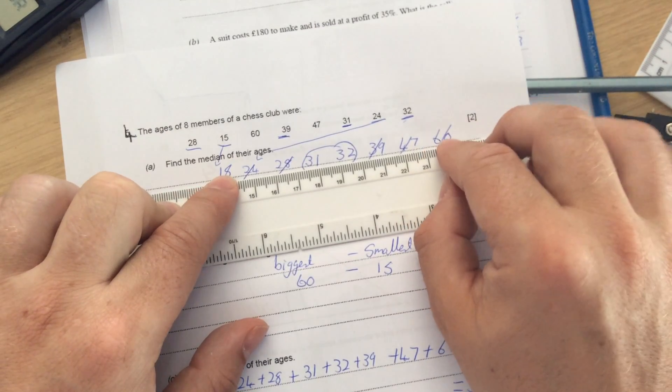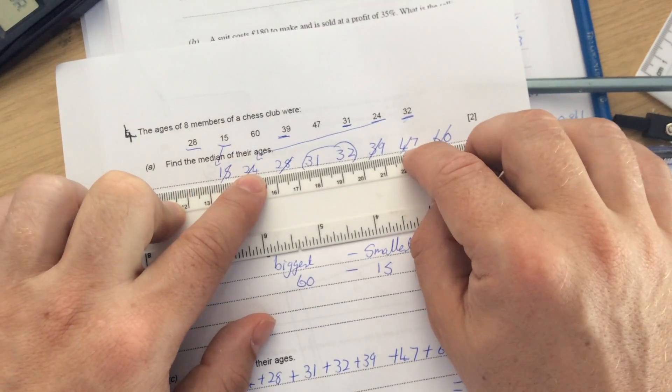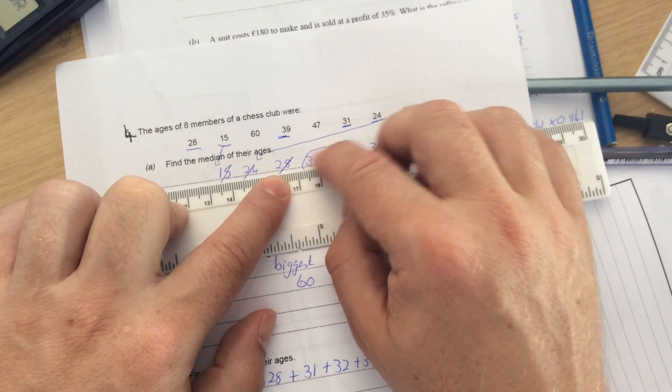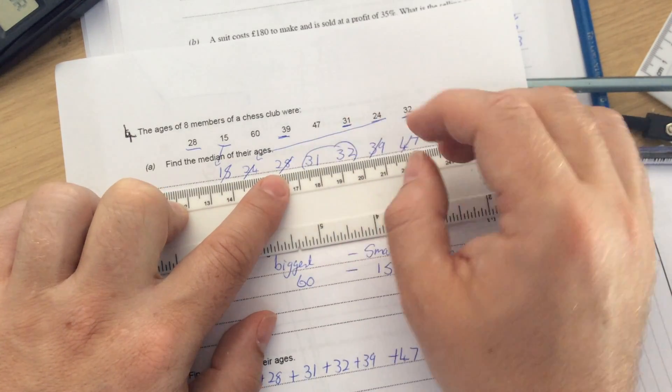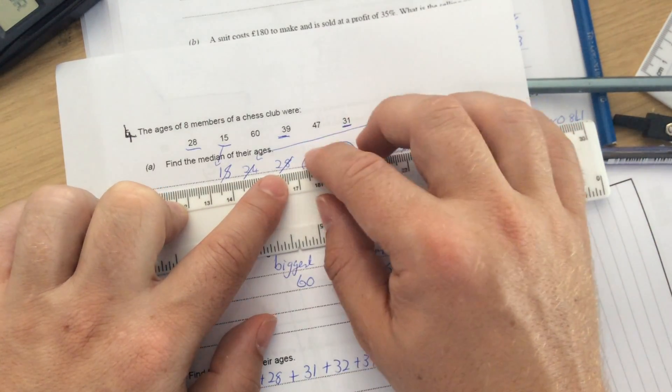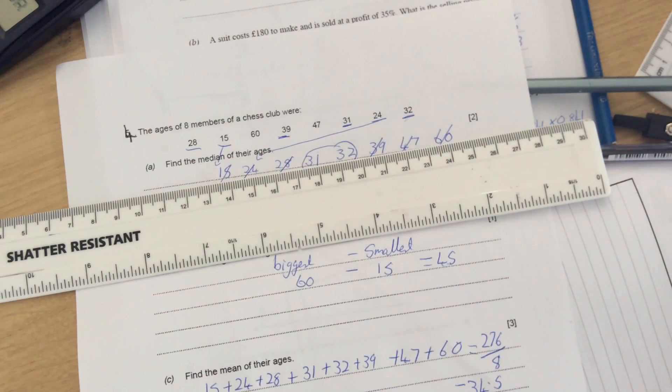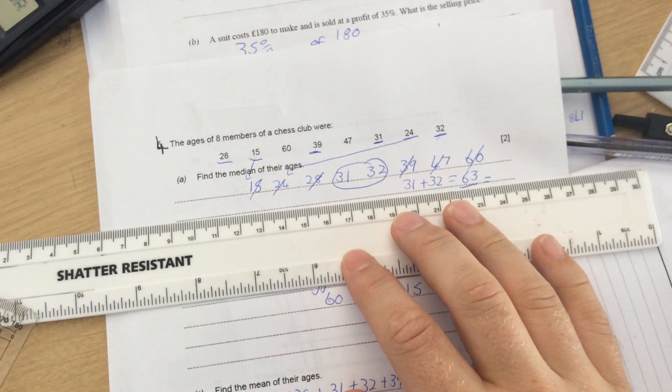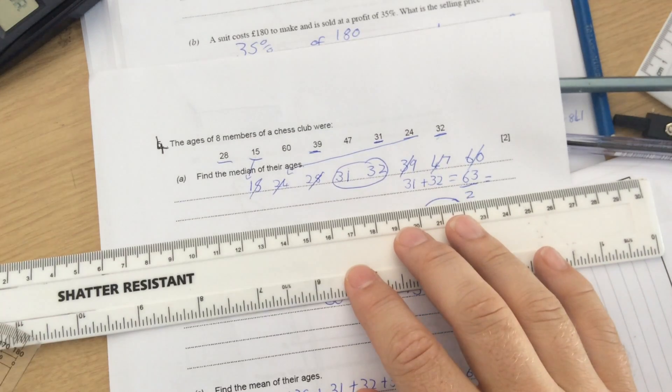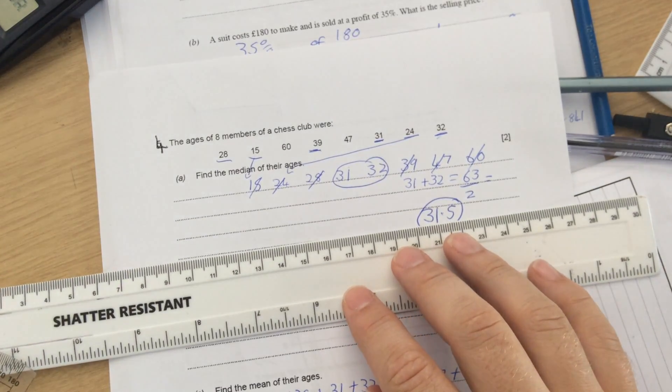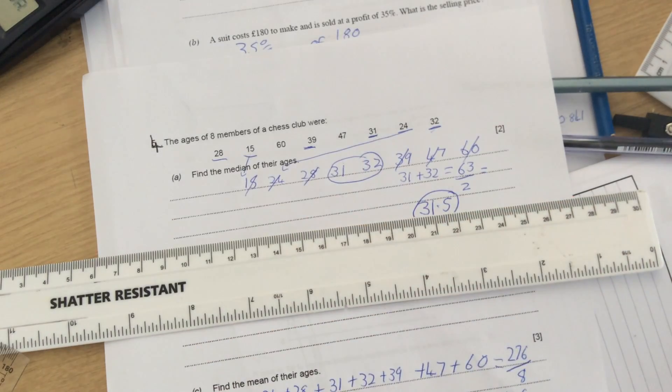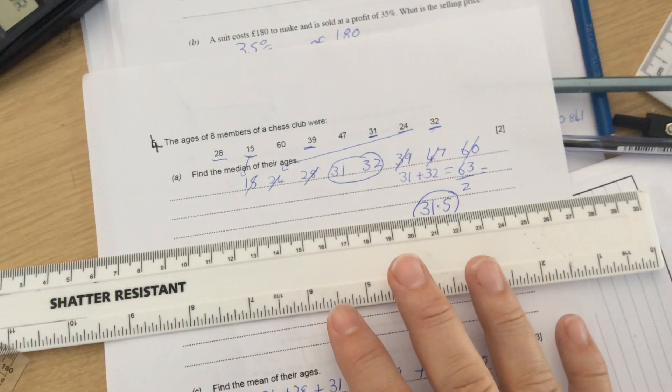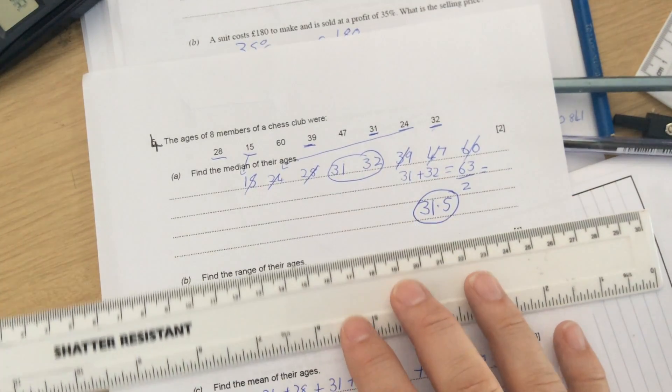And what you're going to do to get the middle, I ticked off the first and the last, the second and the last but one, the third and the last but two. And I'm left with 31 and 32 in the middle. To get the median now, we want the middle of the middle. So the middle of 31 and 32. You can either add them up: 31 add 32 makes 63, and divide by 2. So 63 divided by 2 is 31.5. Or by inspection, hopefully you'll be able to see that the middle of 31 and 32 is 31.5.